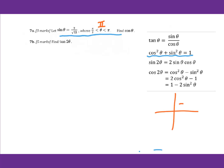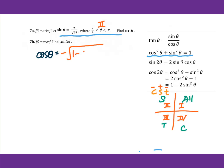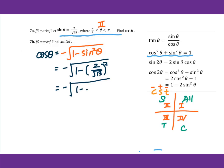We draw the quadrants: first, second, third, fourth. Using 'all students take calculus,' in the second quadrant sine is positive, cosine is negative, and tangent is negative. Therefore, cosine theta equals negative square root of 1 minus sine squared theta. Plugging in: negative square root of 1 minus (2/√13) squared equals negative square root of 1 minus 4/13, which equals negative square root of 9/13, giving negative 3 over square root of 13.